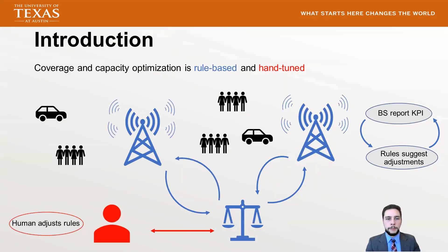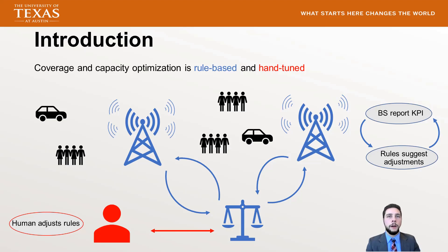CCO, or coverage and capacity optimization, is traditionally a rule-based and hand-tuned system where network operators drive around, record measurements, and use this to decide default values to set the network to. A human monitors the base station's key performance indicators for any significant drop in performance, and if that happens, the operator steps in and adjusts the network. But as networks become denser, this is not a very efficient or flexible system, and we are leaning heavily towards automated coverage and capacity optimization.